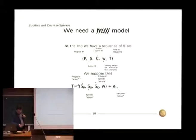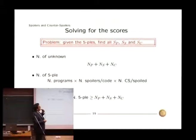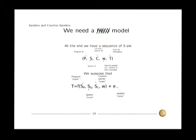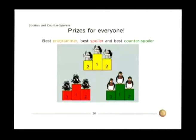And we have this number of unknowns, the number of programmers, the number of spoilers, a number of counter-spoilers. And if you get enough data we can solve the previous set of equations, maybe by least square or something like that. Those are just details that we need to fix, but details. At the end of the day we have a score for everyone so we can give prizes to everyone.